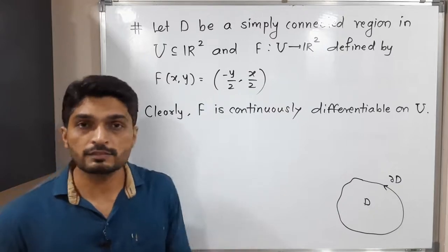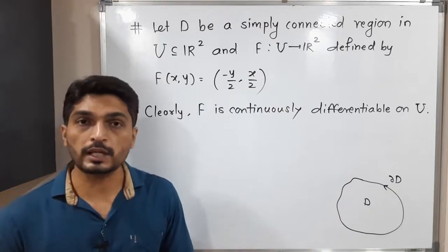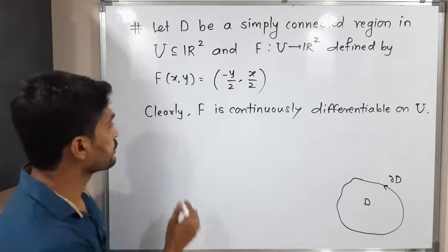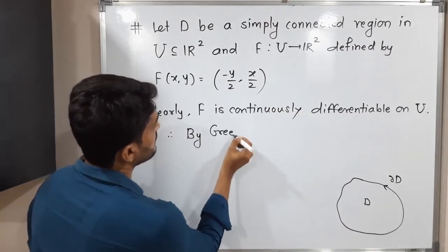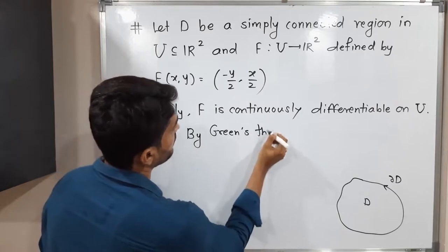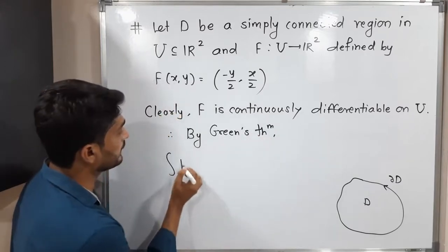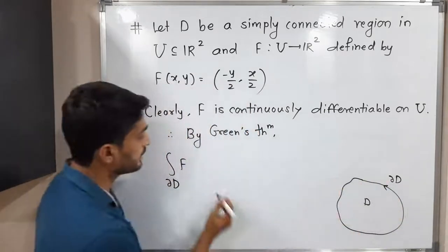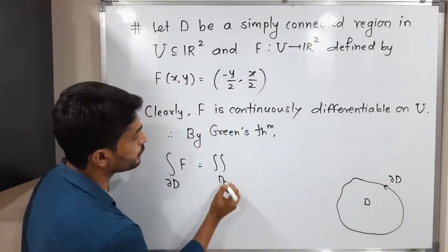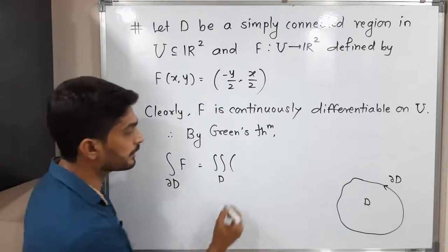Therefore by Green's theorem, the line integral of F over the boundary of D is equal to double integration over D of ∂F₂/∂x minus ∂F₁/∂y dx dy.